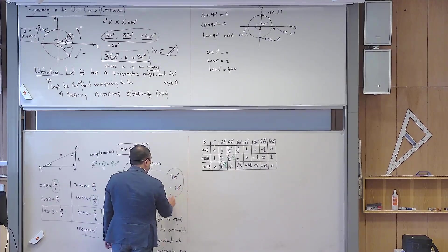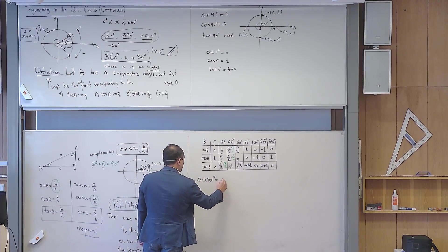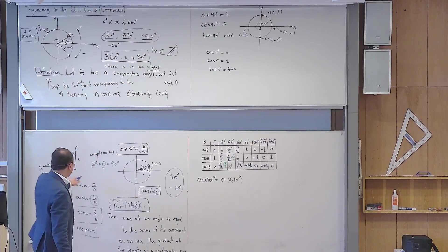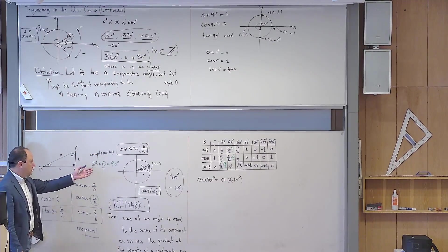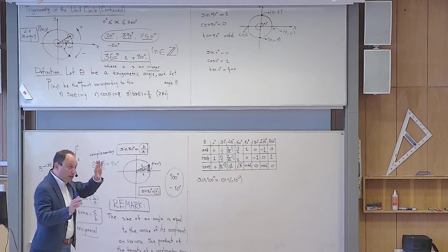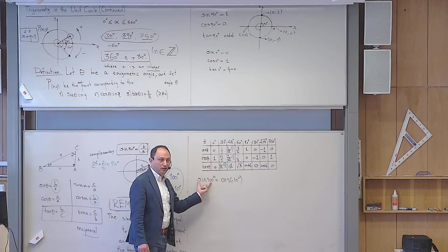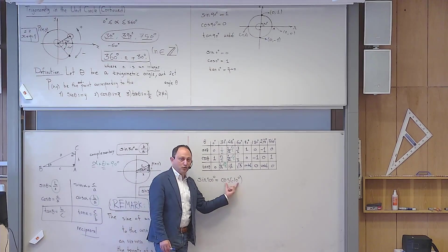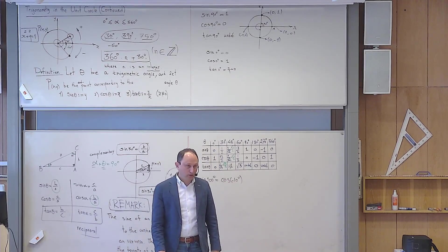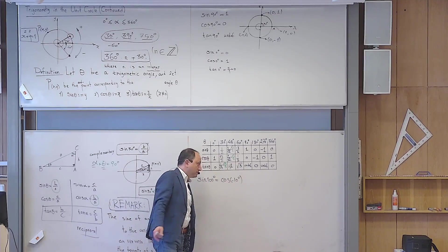Now, can the complementary angle rule extend beyond acute angles? For example, can I claim that sine of 100 degrees equals cosine of minus 10 degrees? I cannot use the right-angle triangle method here, because 100 degrees and minus 10 degrees do not appear in a right-angle triangle. But I can still try to convince you using the unit circle. What is the first step? Draw the unit circle.